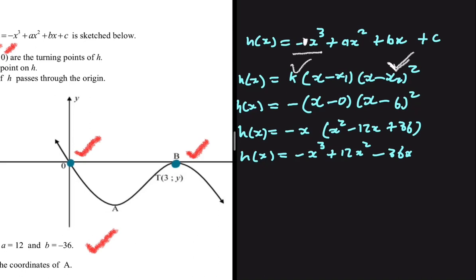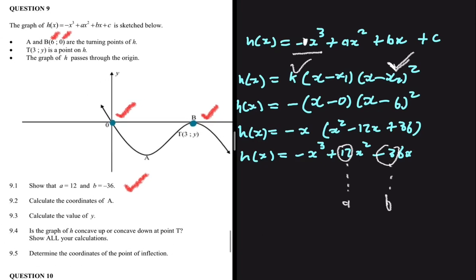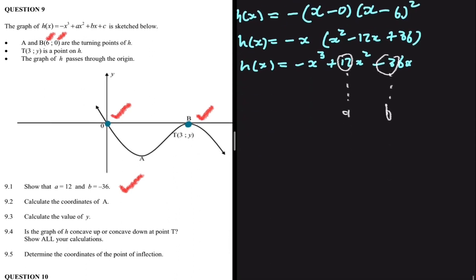From the expanded equation, we can extract a and b: a equals 12 and b equals minus 36. We're not asked for c, but it's easy to see that c equals zero. That completes question 9.1.